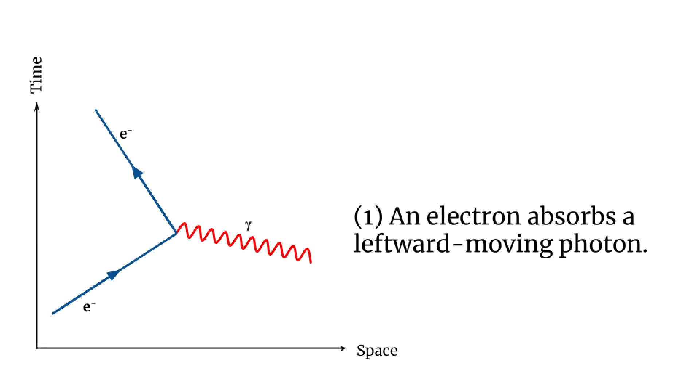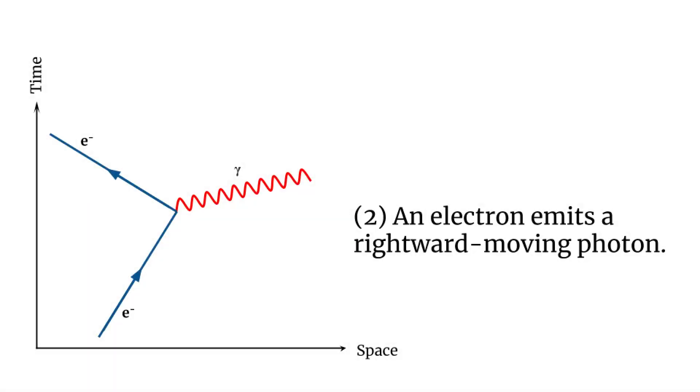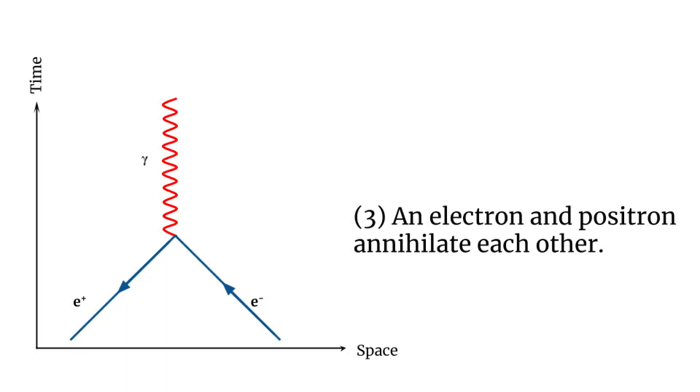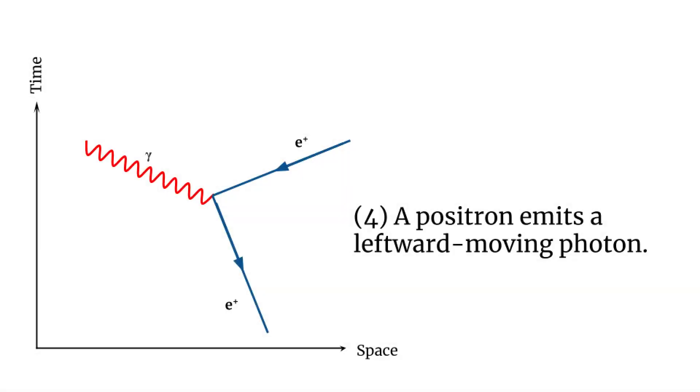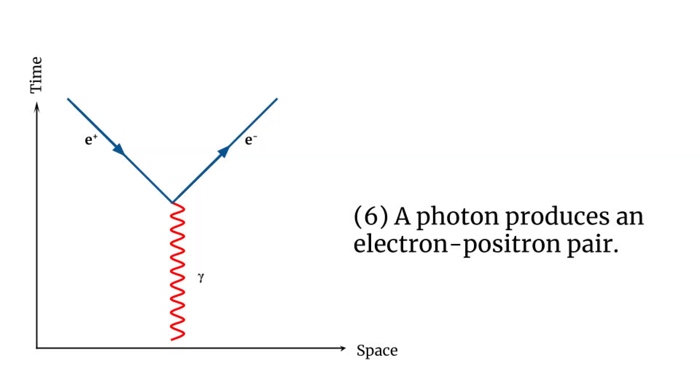For instance, the following Feynman diagram shows the same physical interaction between an electron, e, and a photon, gamma. Depending on how we perceive this interaction rotated in spacetime, we can describe this same interaction very differently. This one interaction can variously be described as: 1. The absorption of a photon by an electron. 2. The emission of a photon by an electron. 3. Electron-positron antimatter annihilation. 4. The emission of a photon by a positron. 5. The absorption of a photon by a positron. 6. Electron-positron pair production.